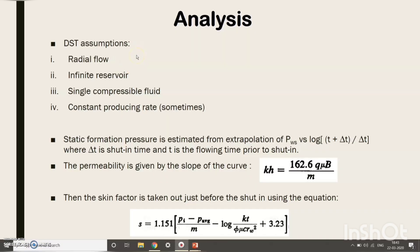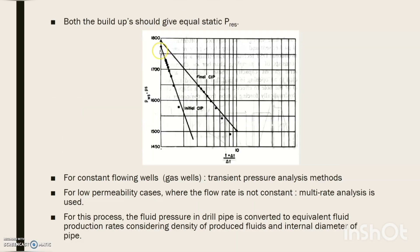DST has a few key assumptions: radial flow, infinite reservoir, single compressible fluid, and sometimes constant producing rate. Analysis is done based on Horner's plot — plotting P_ws versus log((T + ΔT) / ΔT) and extrapolating to estimate the static formation pressure, where ΔT is shut-in time and T is flowing time. Permeability and skin are calculated using the given formulas, where M is the slope of the curve. The key point is that both buildups should yield equal static reservoir pressure, and the y-intercept for both buildups should be quite similar.